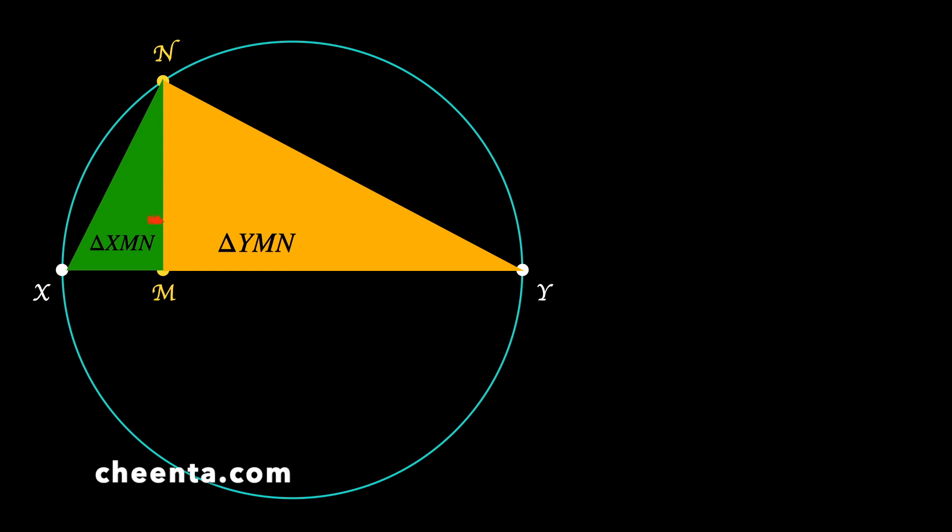To do that, first notice these two angles, the two angles in red. That's NMX and NMY. These two are equal because they are both 90 degrees. So this is simple enough. Now let's look at one more aspect of this diagram.